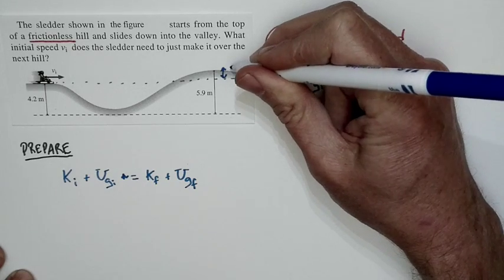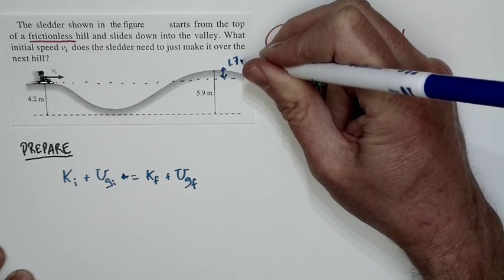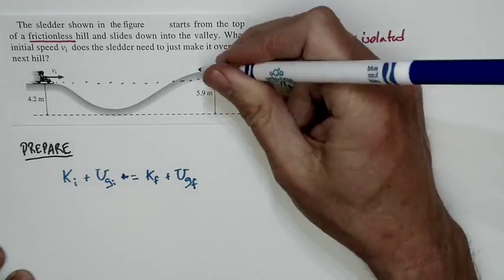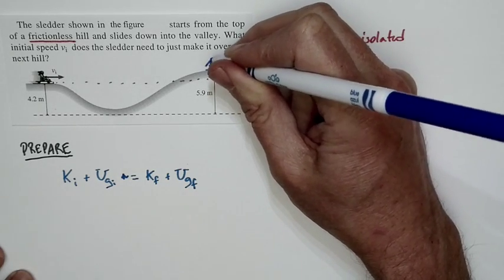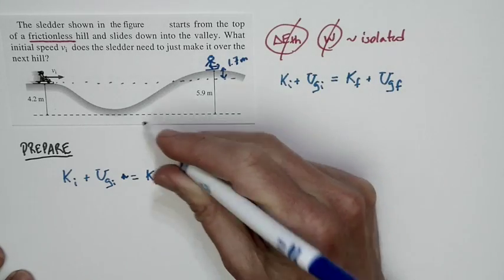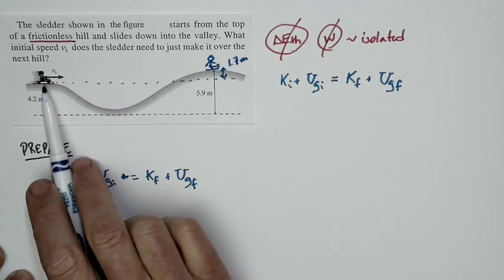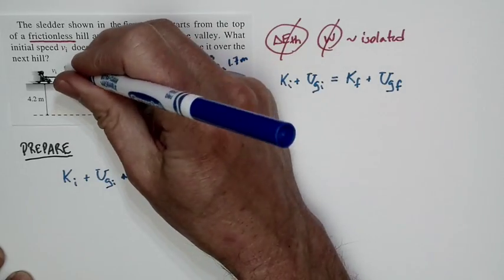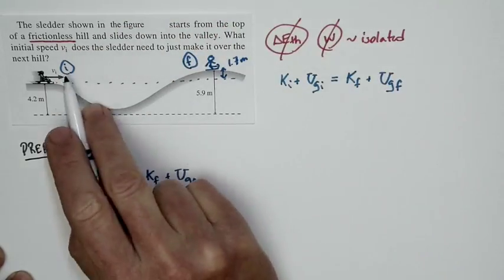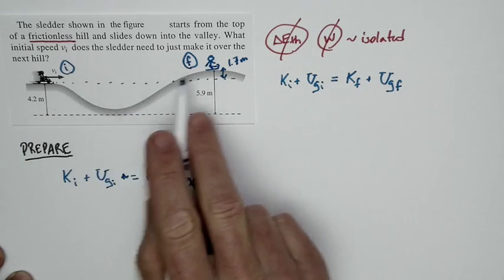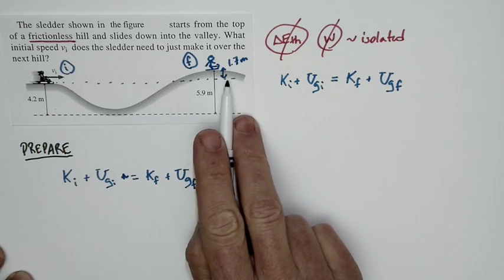And so this sledder ends up 1.7 meters higher than where he or she started. So this sledder ends up here at a greater height. And I don't care that this sledder went through a dip. This sledder goes down and then goes up. I don't care because there's an initial state and there's a final state. And I just care about the difference between here and here. So I'll take this to be my zero.